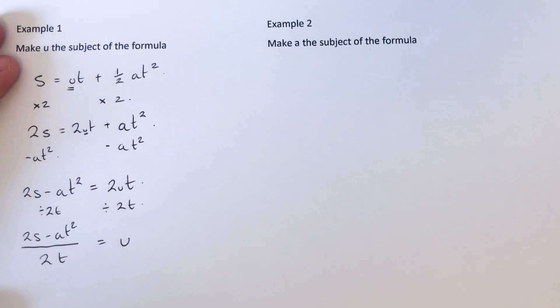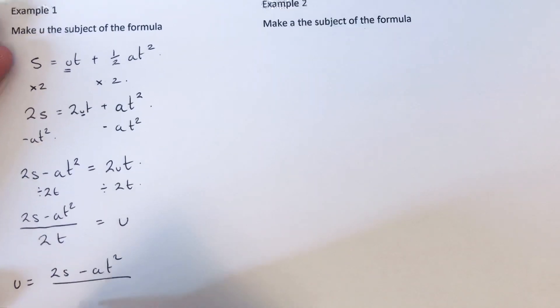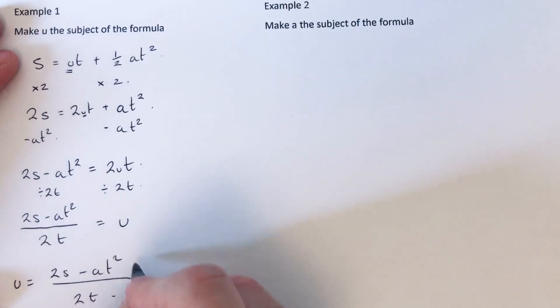And one final thing to do: when you have a formula, you need the u on the left side. So I'm just going to make it u equals 2s minus at squared over 2t, and that is our final answer.